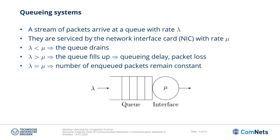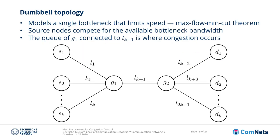Let's have a look at a classical topology used to study congestion control. Here we see the Dumbbell topology, which consists of K source nodes connected to their corresponding destinations on the other side through two gateways, G1 and G2. This topology is interesting for congestion control because it models a single bottleneck, and bottlenecks are where congestion occurs because of the max-flow min-cut theory. Because all of the traffic flows from left to right, we can immediately say where congestion is most likely to happen: at the queuing system connecting gateway G1 with the bottleneck link in the middle. All source nodes will compete for the available bandwidth given by the link capacity of the bottleneck link.